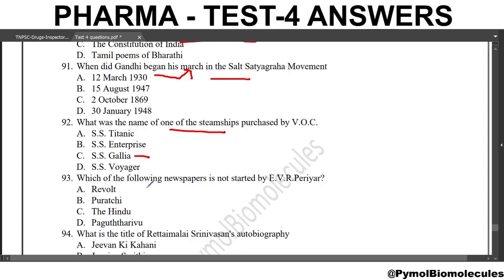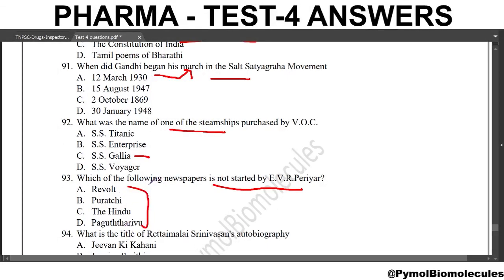Next question: which of the following newspapers is not started by E.V.R. Periyar? All these newspapers — Revolt, Puratchi, Pagutharivu, and Kudi Arasu — were started by Periyar. But The Hindu was started by Bharatiyar.